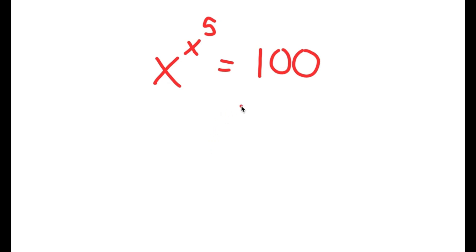Alright, so in this problem, I have x to the power of x to the power of 5 is equal to 100.